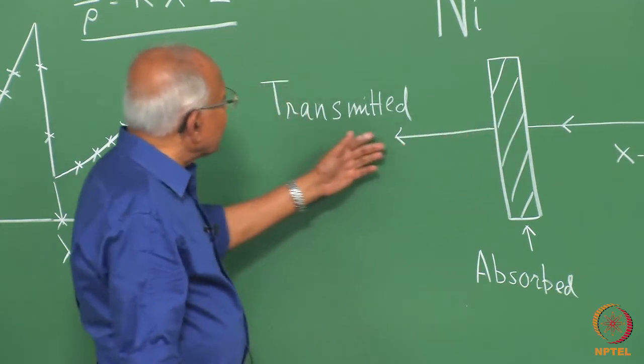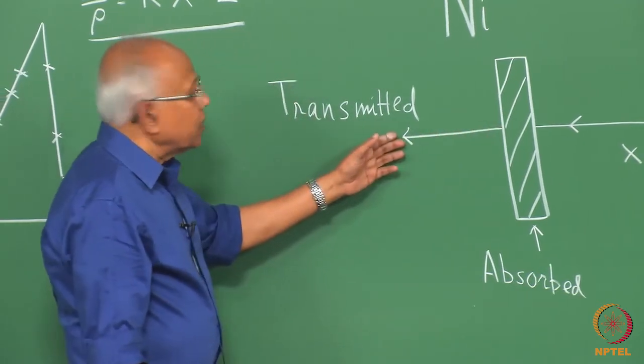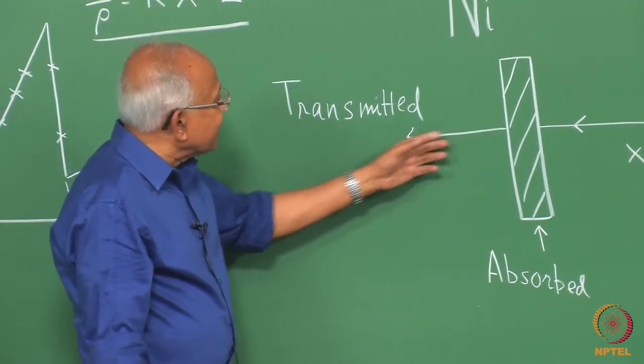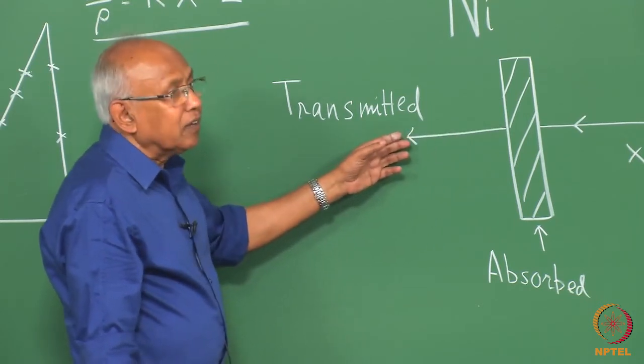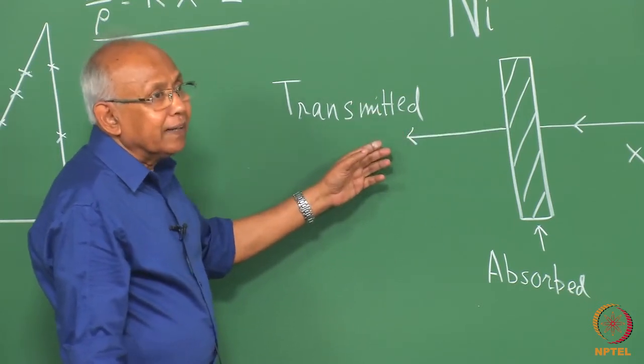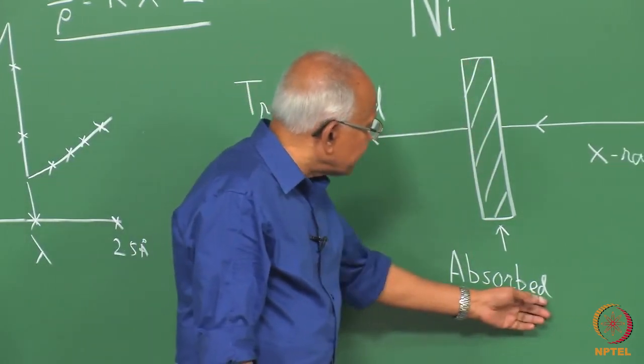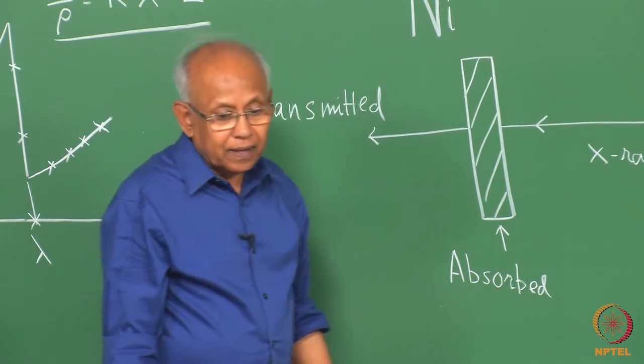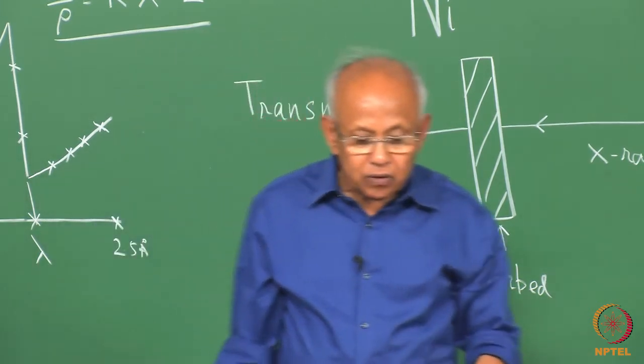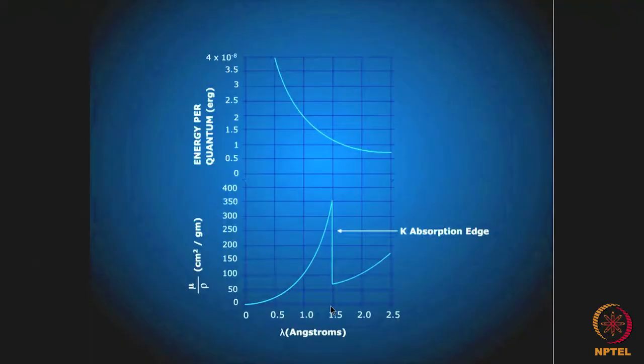As a result, when you look at the transmitted beam we automatically notice that the intensity of the transmitted beam is much much lower, as if that extra energy has been absorbed by the material. That is the reason why we find that mu by rho suddenly shoots up. This particular wavelength here is known as the K absorption edge wavelength of nickel.